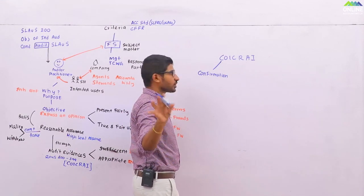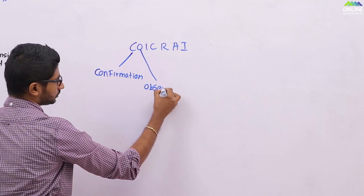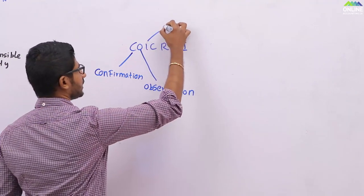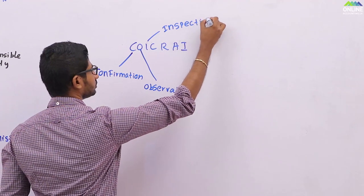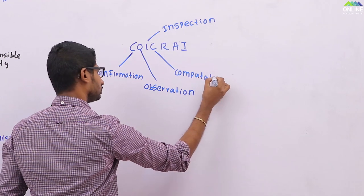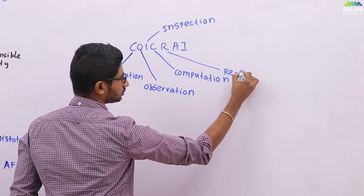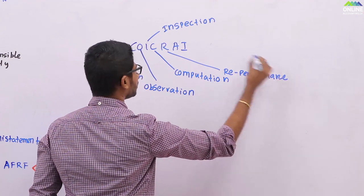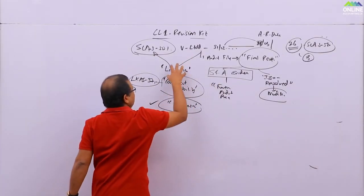Just focus on the word. The O means observation. I means inspection. Here C, computation or re-performance.